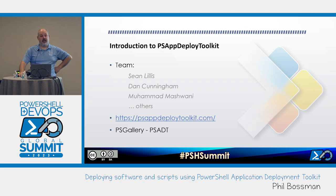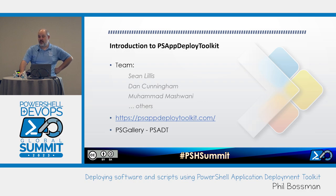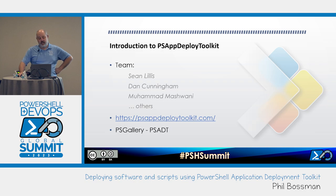Let me talk about who I am. My name is Phil Bossman. I am a Citrix architect in the Research Triangle area, Raleigh, North Carolina. My role is client systems, so I often deal with delivering applications to end nodes, but also primarily delivering applications through Citrix.